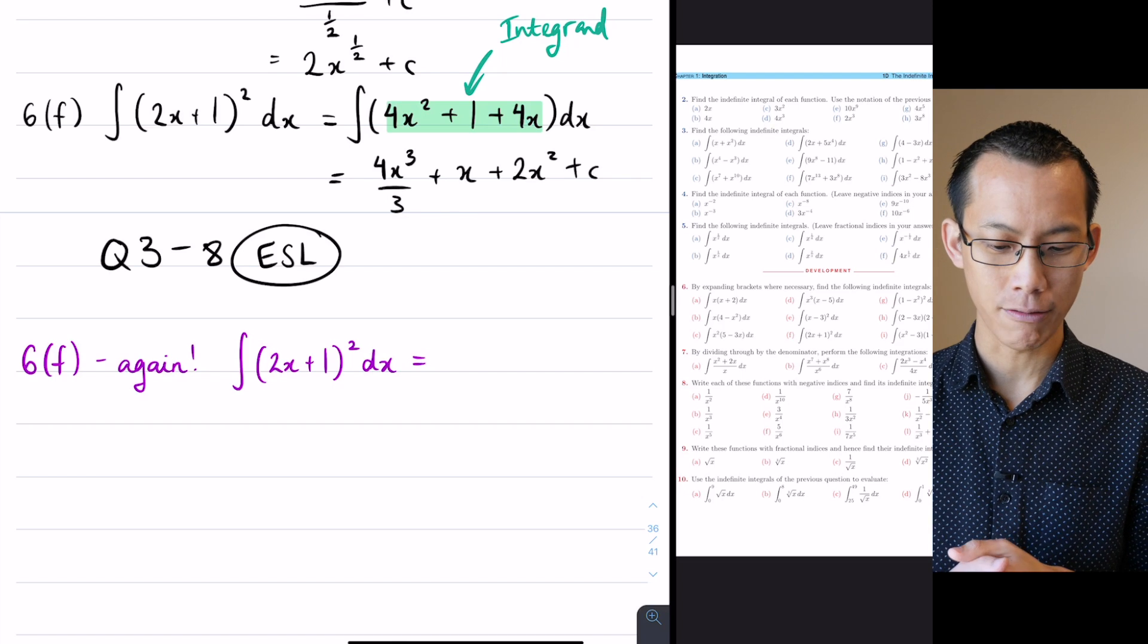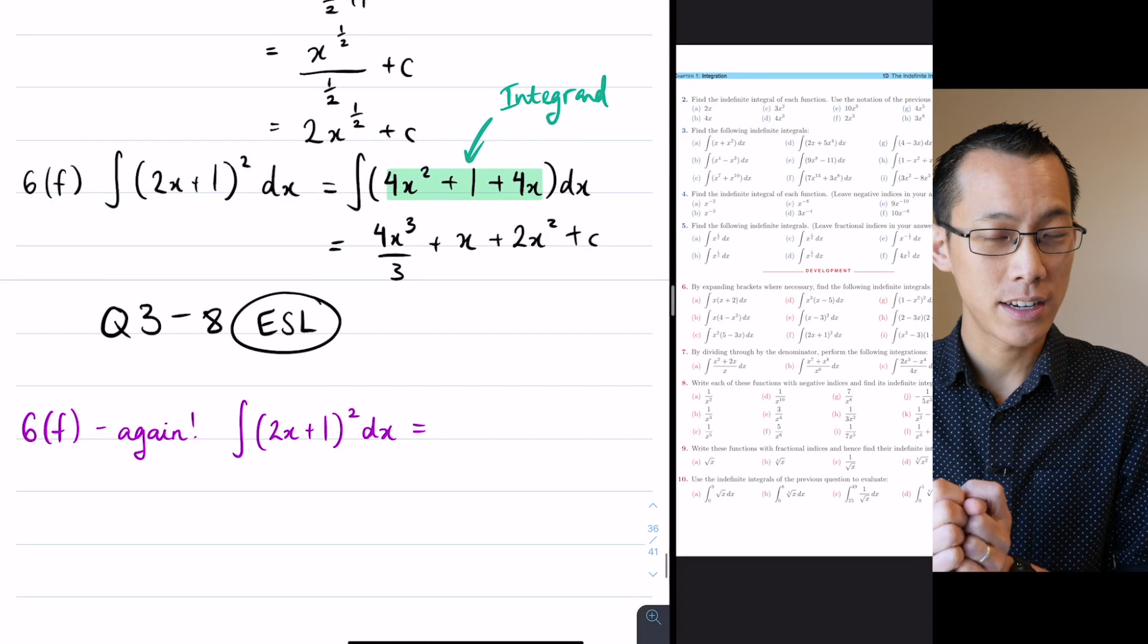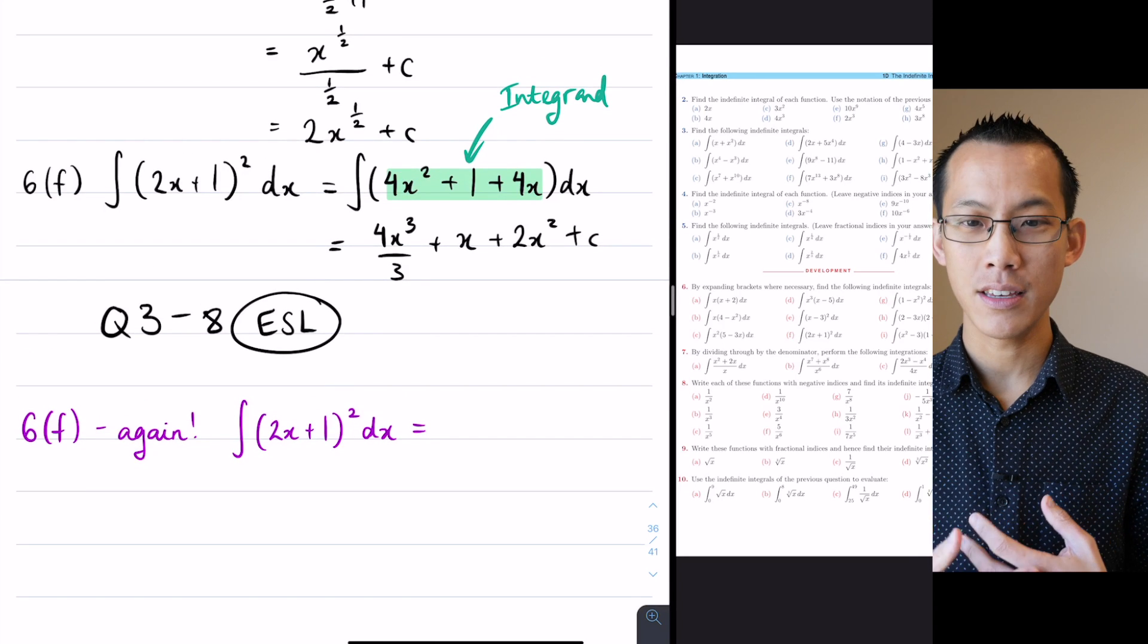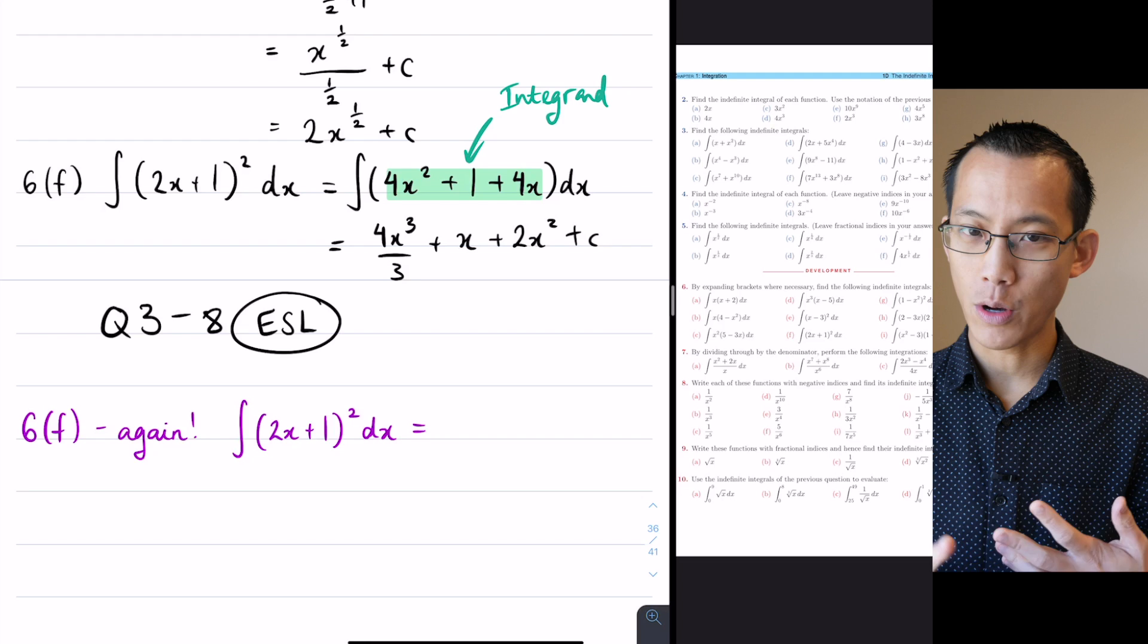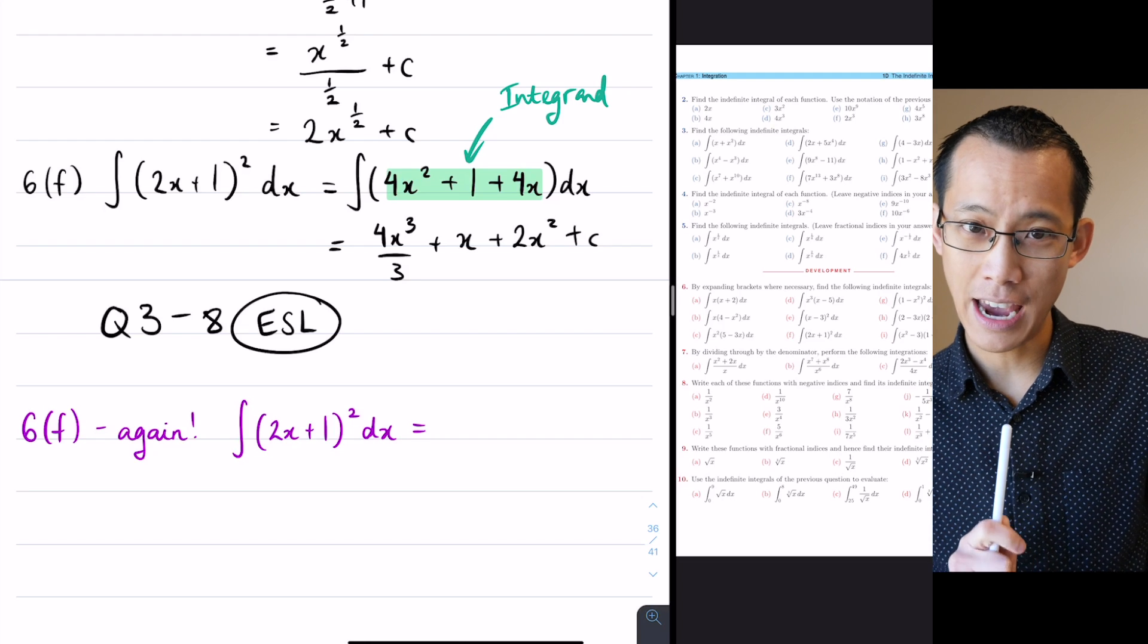There's another way to do this, and I would argue it actually is more efficient. There's less working out that you need to worry about, and that's with reverse chain rule.